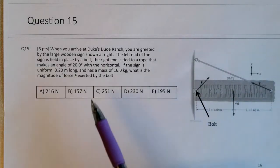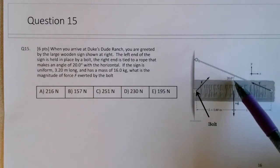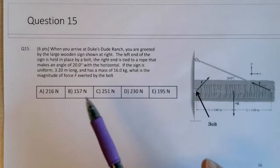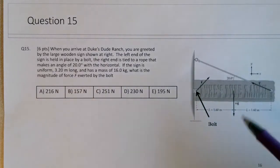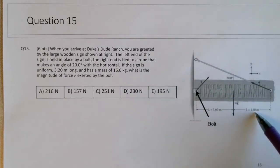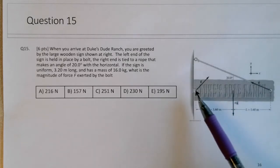The left end of the sign is held in place by a bolt. The right end is tied to a rope 20 degrees to the horizontal. And the sign is uniform, that means it's uniform in mass. 3.2 meters long. The weight force is acting right at the center, 1.6 and 1.6. And it has a mass of 16 kg. What is the magnitude of the force F exerted by the bolt?